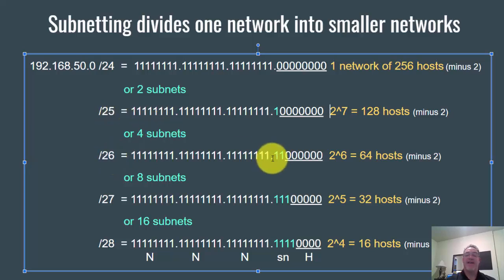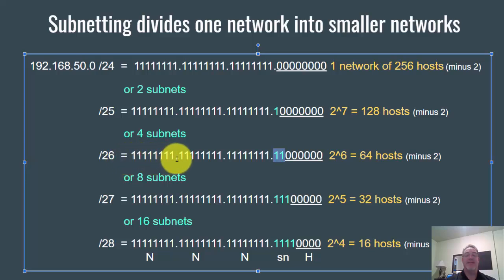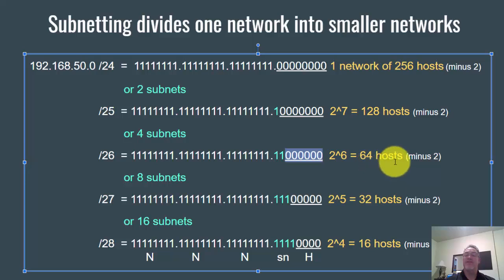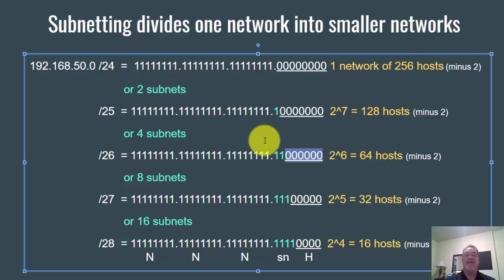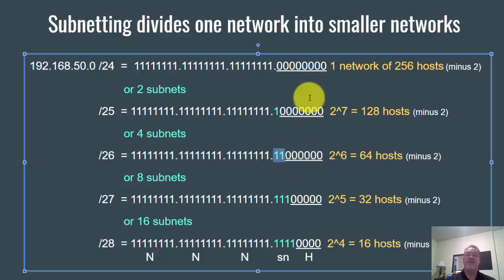For four subnets, notice I have two more bits in my subnet mask. I go from /24 to /26. Now my subnet mask is eight ones, eight ones, eight ones, and then two more ones — I only have six zeros. Two to the sixth power is 64 hosts minus two. So it makes sense: fewer host bits means fewer hosts. Also, for four subnets with /26, I've got two subnet bits. I borrowed two ones from the zeros, and two to the second power is four — creating four subnets.